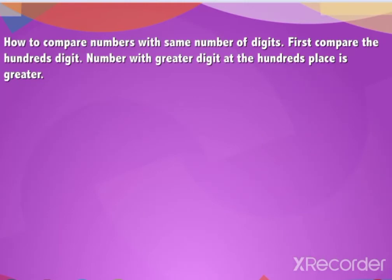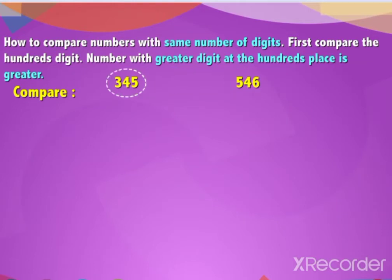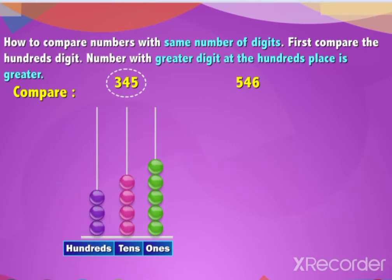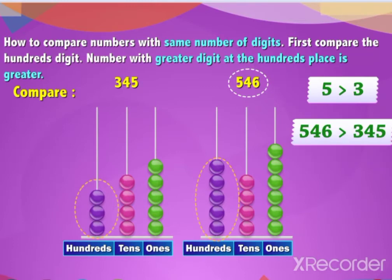Let us learn how to compare numbers with the same number of digits. First, compare the hundreds digit. The number with the greater digit at the hundreds place is greater. For example, when we compare three hundred and forty-five and five hundred and forty-six, since 5 is greater than 3, number 546 is greater than 345.